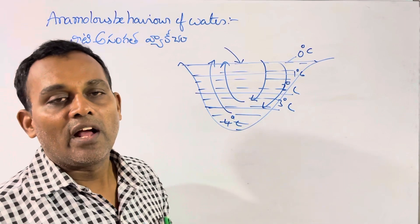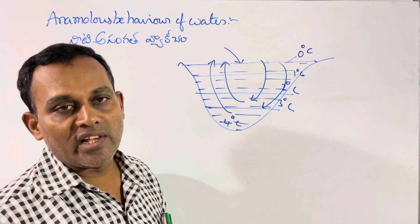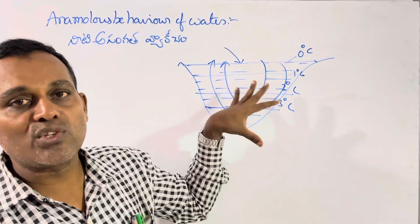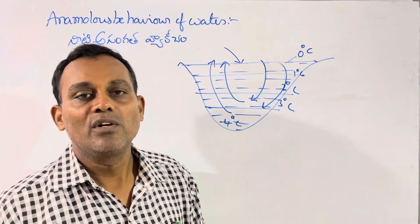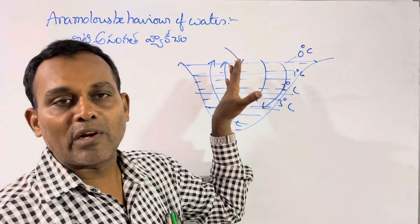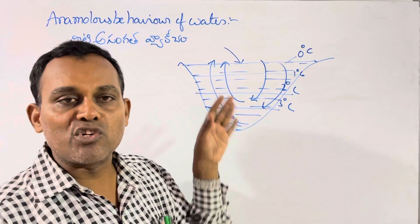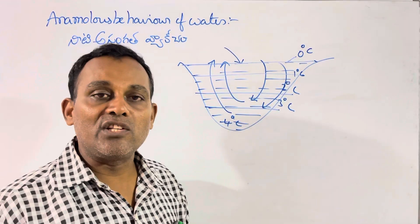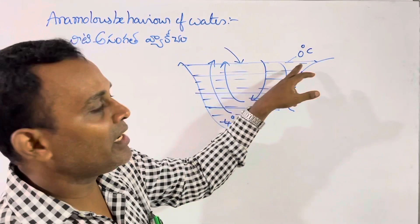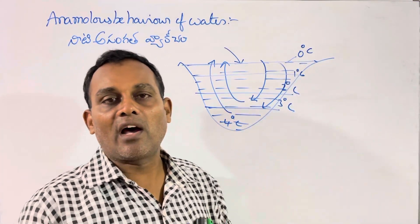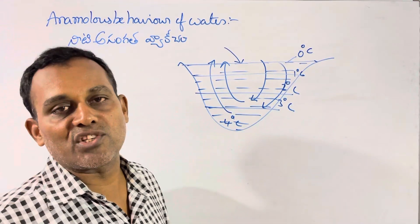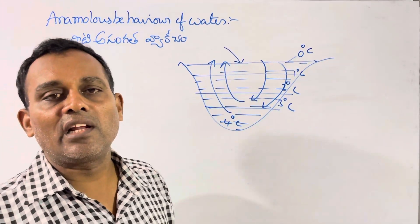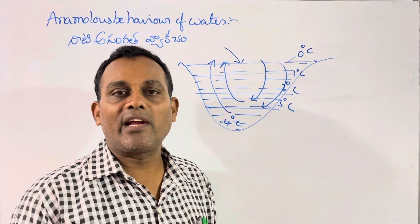That is why aquatic animals — fishes, snakes, frogs — are able to survive. Even when the top layer of the lakes or rivers is formed as ice in cold countries in winter season, the below layers remain in the liquid state. That is why aquatic animals survive.